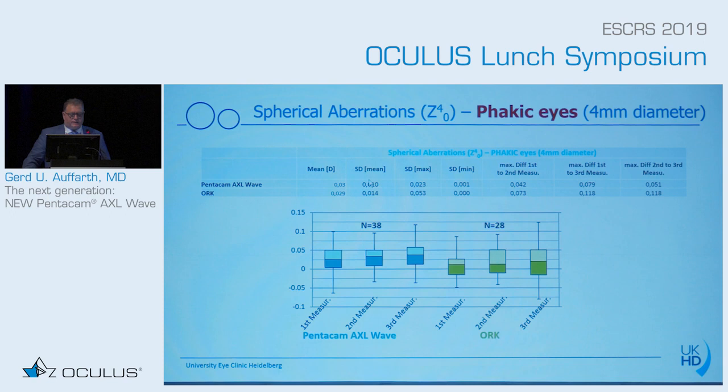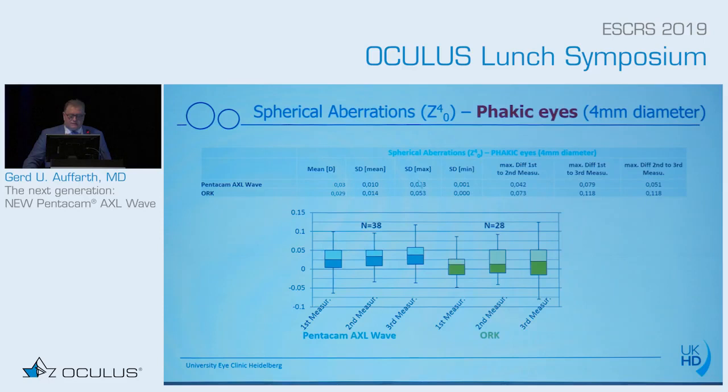Looking at spherical aberration in phakic eyes — a comparison between the Pentacam and the Schwind wavefront analyzer — you can see the first, second, and third measurements with the Pentacam AXL, and here with the Schwind device. They measure more or less exactly the same. Standard deviation is similar in both machines, actually a little bit better with the Pentacam. The difference between first, second, and third measurements is much smaller in the Pentacam AXL compared to the Schwind device.